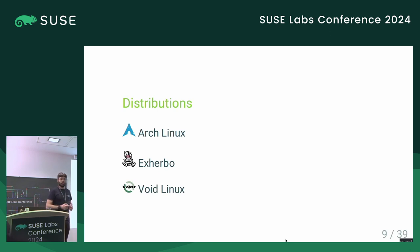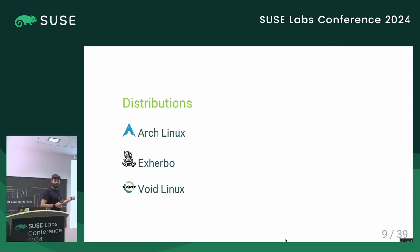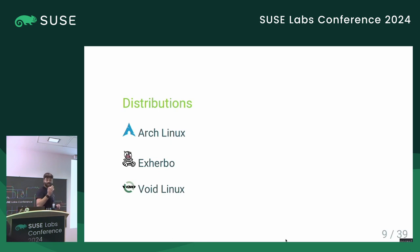Which distributions are we going to see today? First, Arch Linux — let's do a round of hands up: how many people have heard of Arch Linux or used it in the past? That's a lot of people; it's quite a common distribution. I'm also going to show Exerbo, which I was packaging for in my free time for a couple of years before joining SUSE. It's a source-based distribution, so it doesn't ship binaries — a completely different approach.